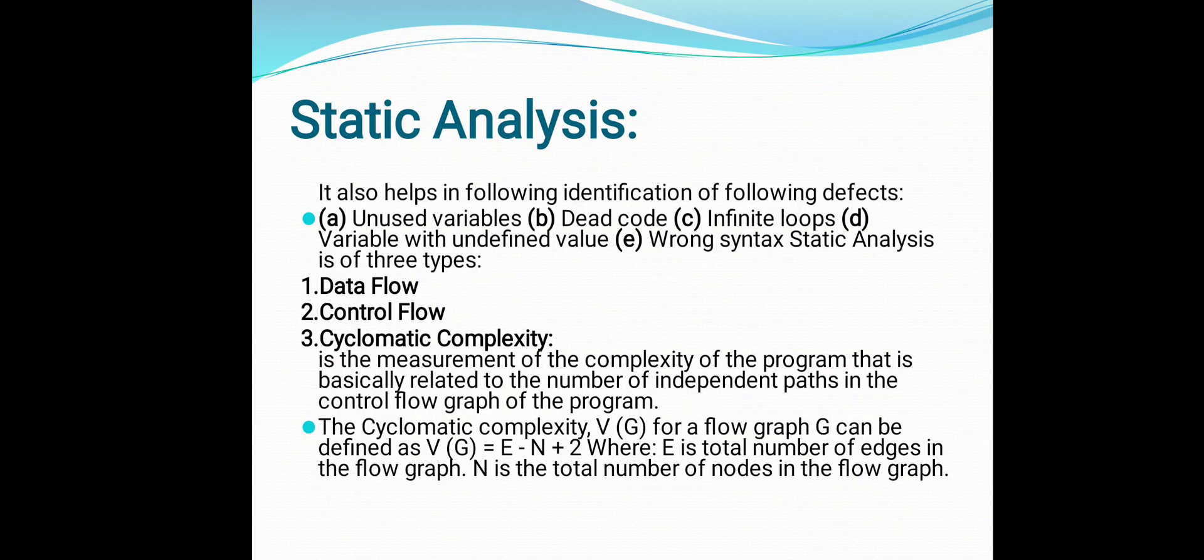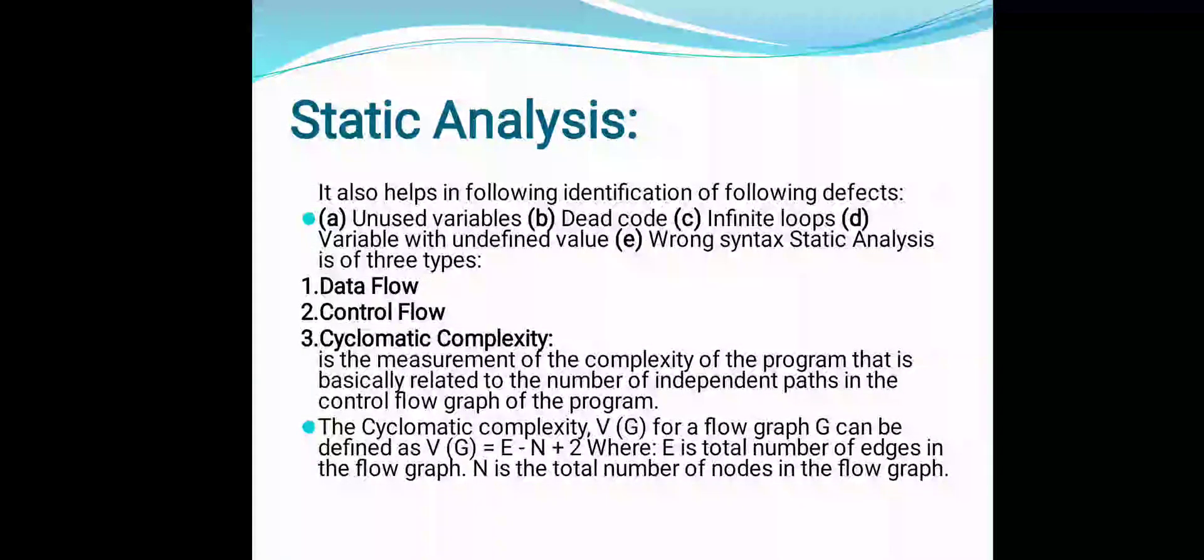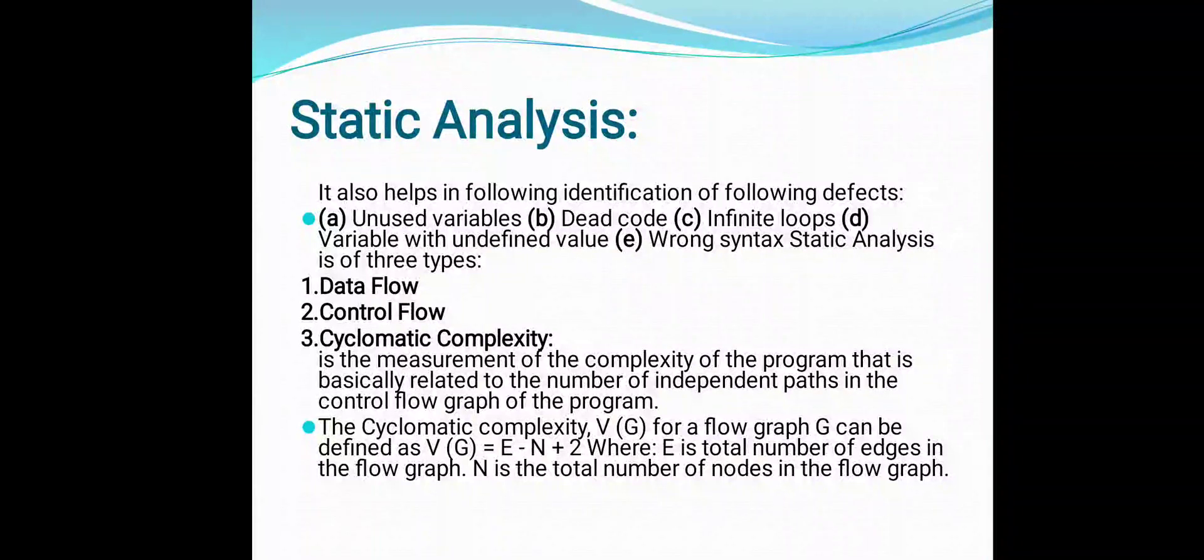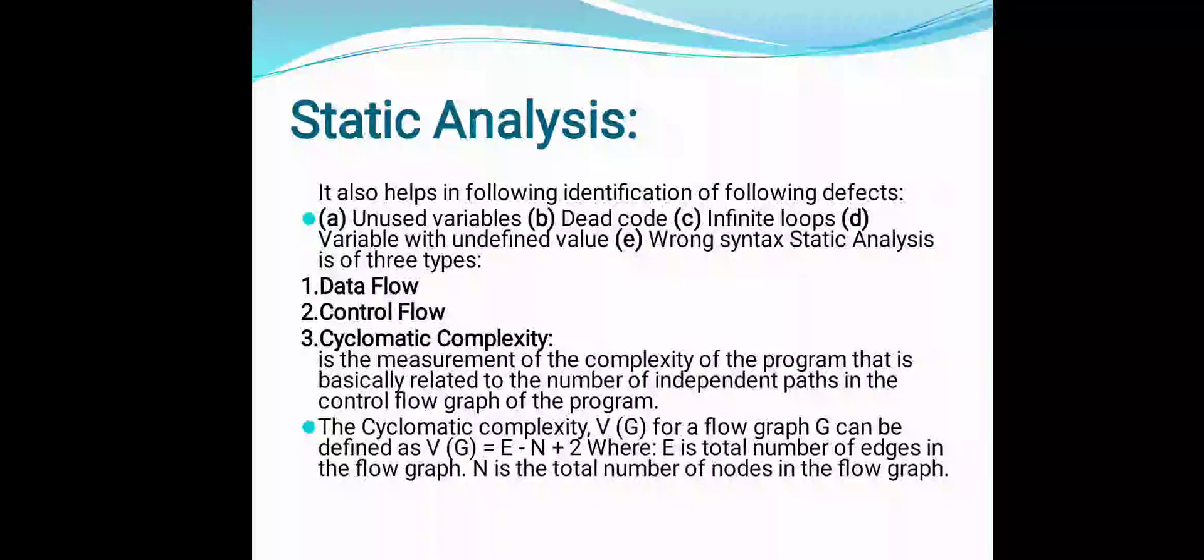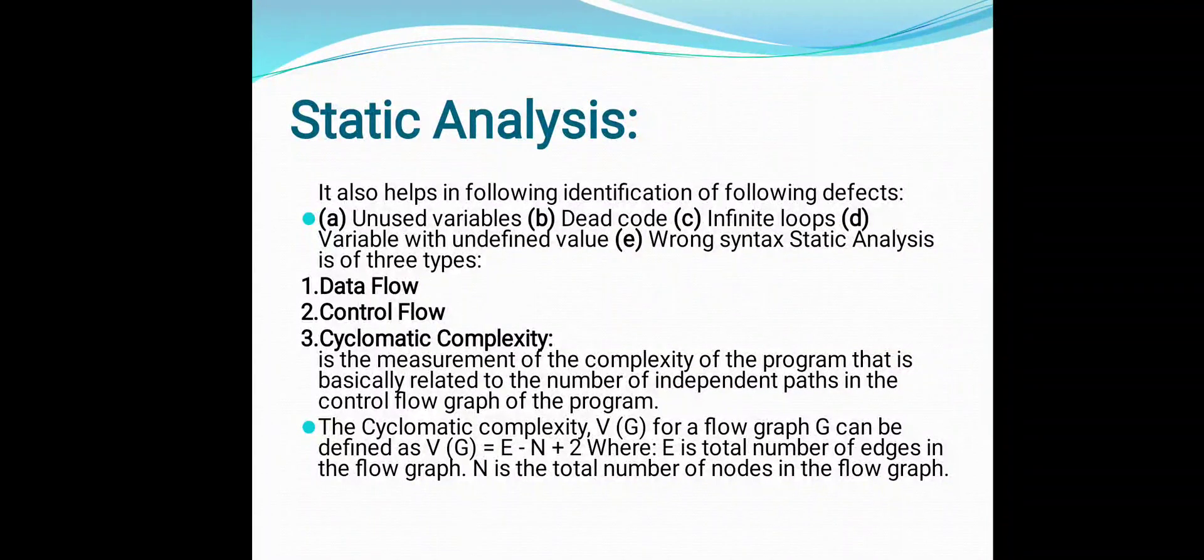Generally, there are so many formulas, but here I am giving you one simple formula example: V(G) = E - N + 2, where E denotes the number of edges and N denotes the number of nodes in the graph. For example, if there are three nodes and for connecting those three nodes, there is a first node that is the parent node and two child nodes, then there are two edges from parent to two children. If number of edges are two and number of nodes are also two plus two, so two minus two is zero plus two, meaning the cyclomatic complexity of your particular software is two.